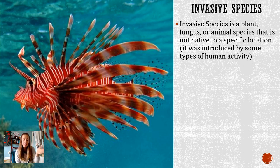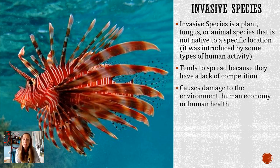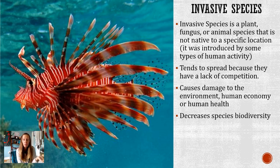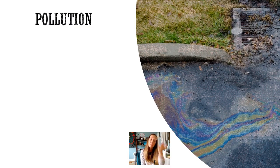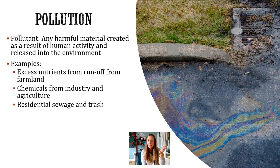Next, invasive species — this picture on the left is a lionfish, which looks nice but is super invasive in our area. Invasive species are animals, fungi, or plants that aren't native to a specific location; they don't belong there and were brought by humans either intentionally or unintentionally. They tend to spread because there's a lack of competition — nothing fights them for that space or keeps them in check. It causes damage to the environment, our economy, and our health, and decreases species biodiversity because invasive species can overpopulate and wipe out native species.